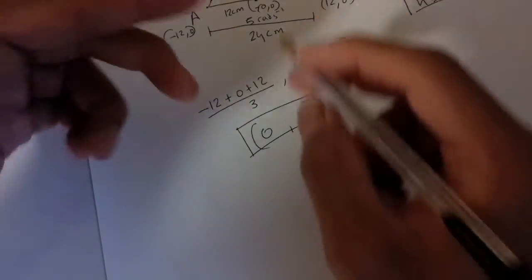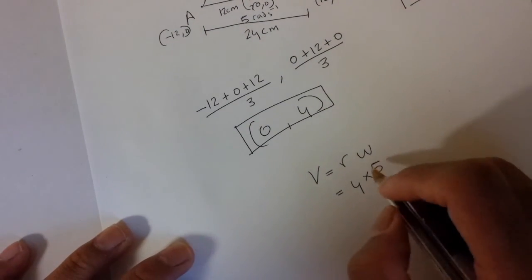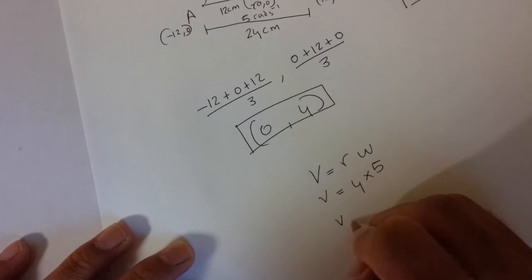Now just substitute the value 4 and angular velocity is 5 radians per second. So we will be getting speed as 20 centimeters per second.